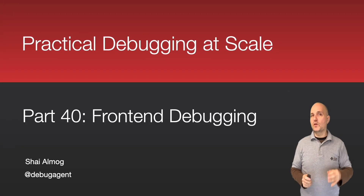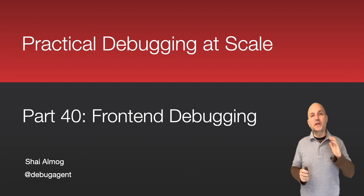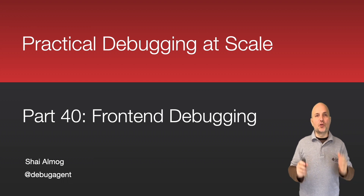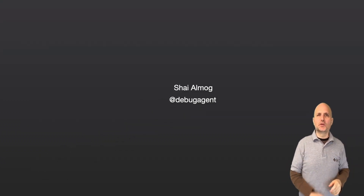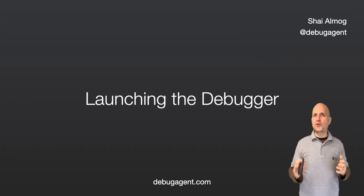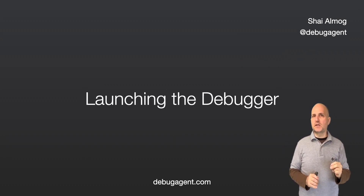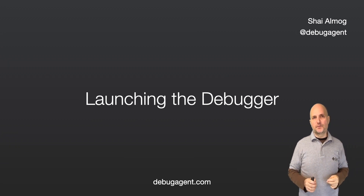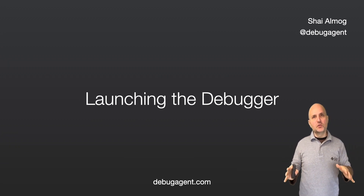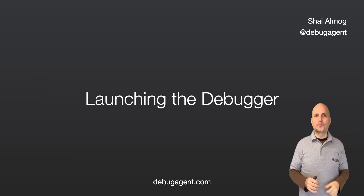Welcome back to the 40th part of debugging at scale, where we delve into the browser and its fantastic capabilities. Instead of printing the stack trace, one of the neat tricks in JavaScript is instant debugging — just use the debugger keyword to launch the debugger on that line.